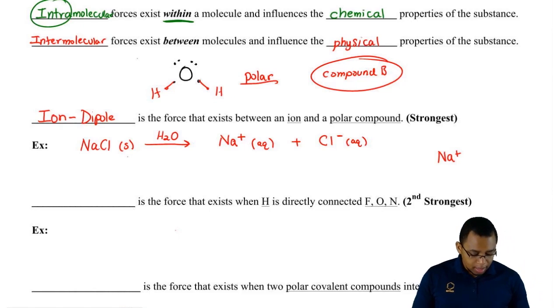Because it's polar, we're going to say that one end is partially positive, the other end is partially negative. Oxygen has a larger electronegative number, so this end will be partially negative. The hydrogens are less electronegative, so they're going to be partially positive.